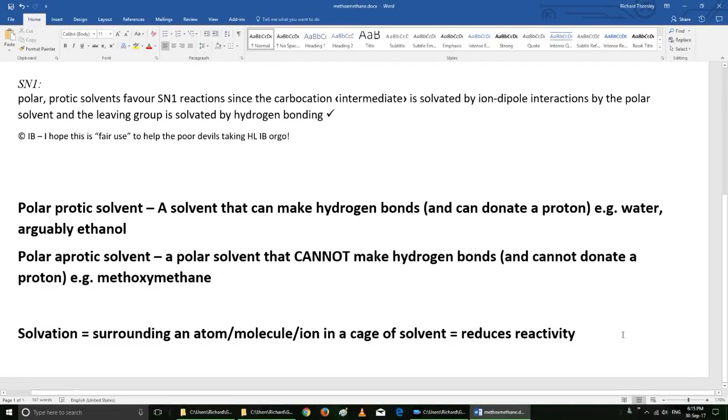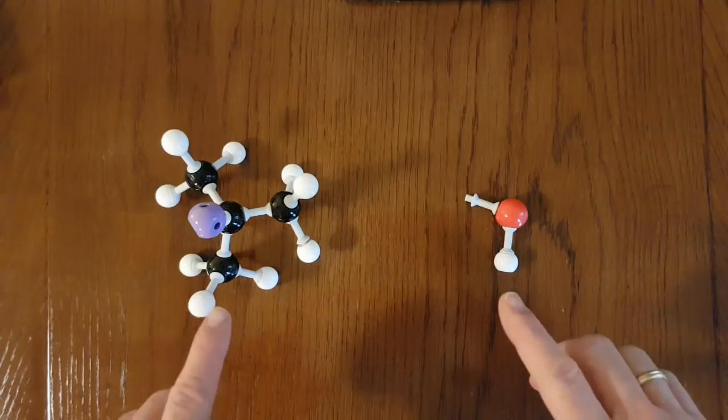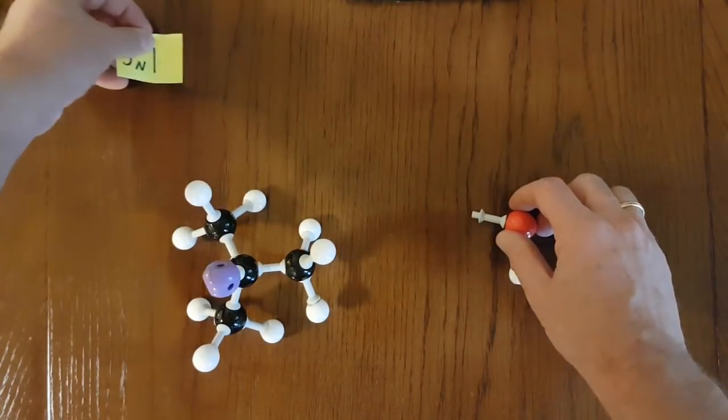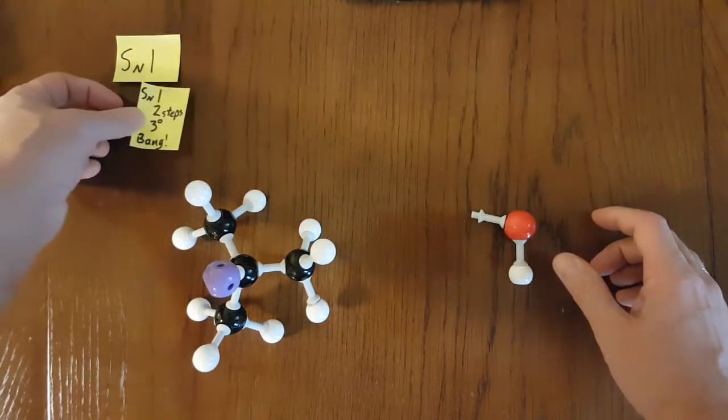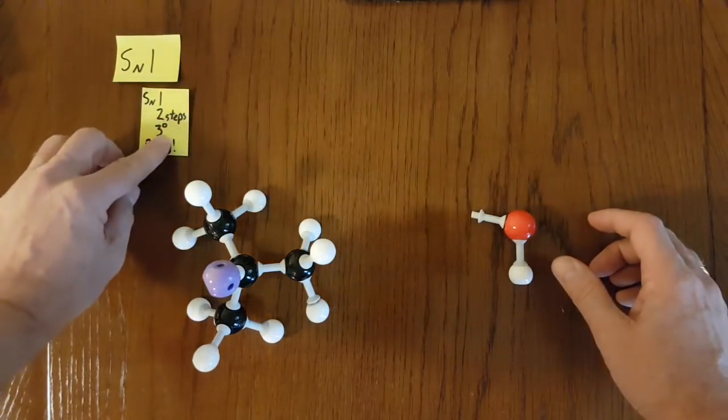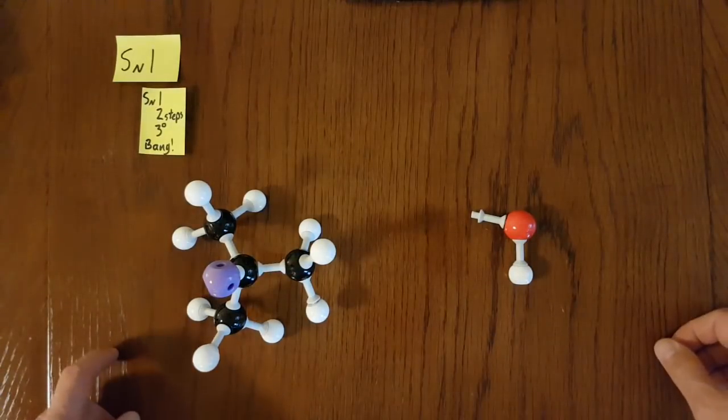Alrighty. Deep breath, here we go. So I'm going to break this video into four parts to explain the four possible combinations. Let's start with SN1 and just recall one, two, three, bang. So SN1 is a two-step process with tertiary haloalkanes and bang means it's the faster of the SNs.